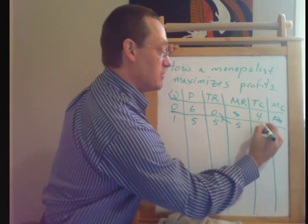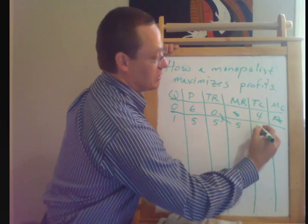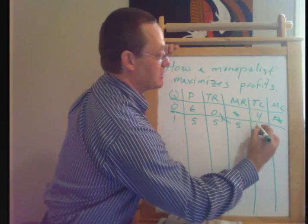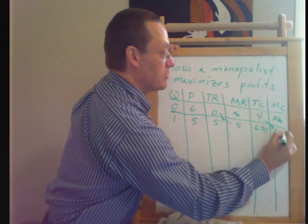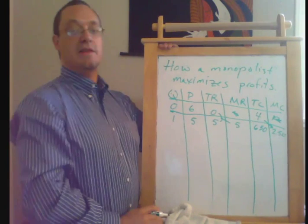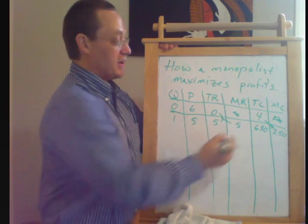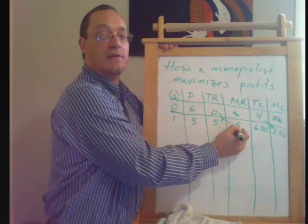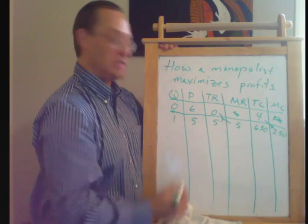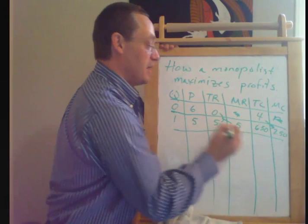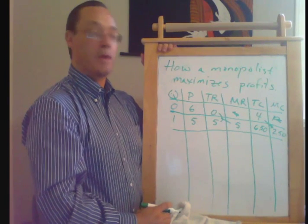And let's suppose that producing this first unit caused us to incur $2.50 of costs. So marginal cost was $2.50. And you can see that we made ourselves better off by producing this first unit because it added $5.00 to revenue and it only added $2.50 to costs. So our marginal profit on that is $2.50.